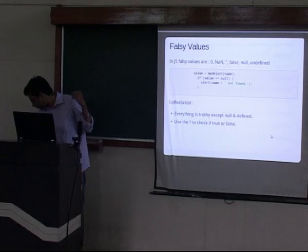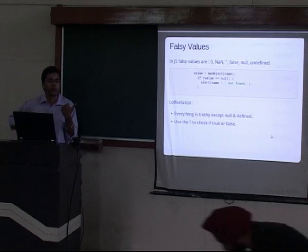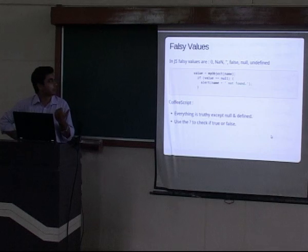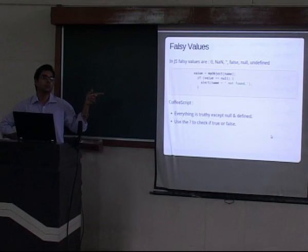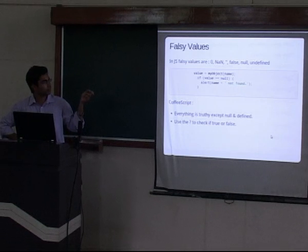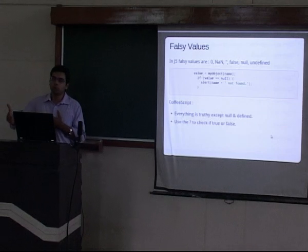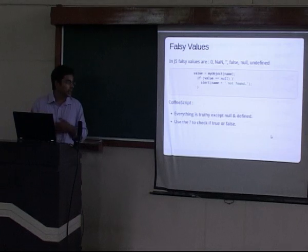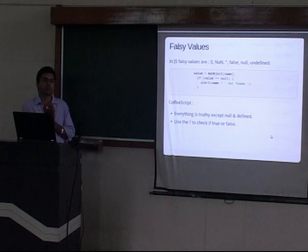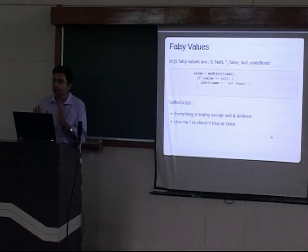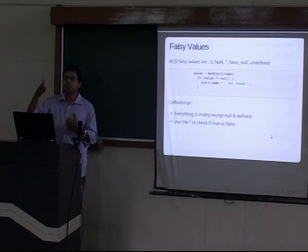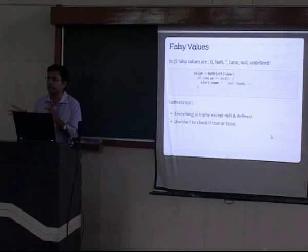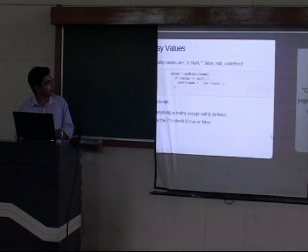Falsy values — Douglas Crockford highlights this too. In JavaScript, values like `0` and `NaN` are falsy, but that doesn't make much sense because zero is a perfectly valid number. In CoffeeScript, everything is truthy except `null` or `undefined`. You can use the question mark operator — like in Ruby — to check if a value is null or undefined. This is especially useful in conditionals like `x = x or y`.